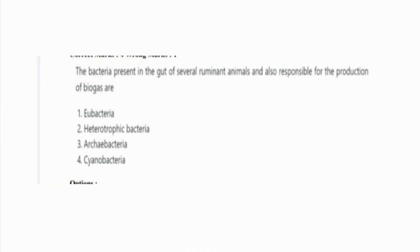Next question: the bacteria present in the gut of several ruminant animals and also responsible for the production of biogas are? The options are eubacteria, heterotrophic bacteria, archaebacteria, and cyanobacteria. The right answer is option 3, archaebacteria.